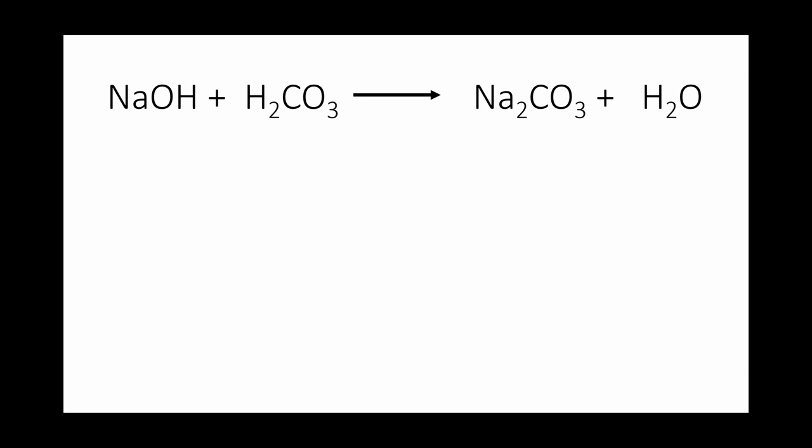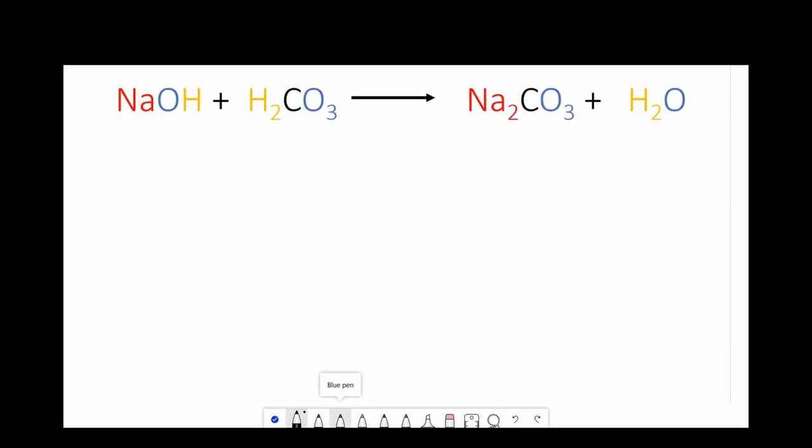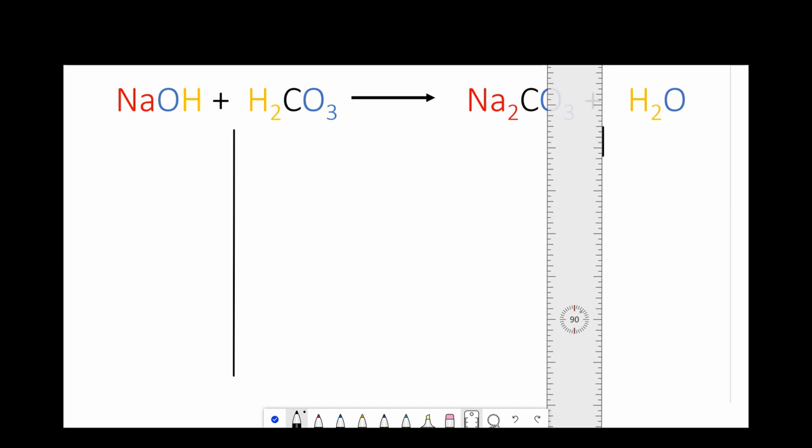Okay so again I'm going to switch to my whiteboard. And the first thing I'm going to do is I'm going to draw those lines that I love drawing. I haven't got a ruler out to do this. And then I'm going to go ahead and fill out how many atoms of each element we have on either side. I've color coded this so it's really easy for you to see.